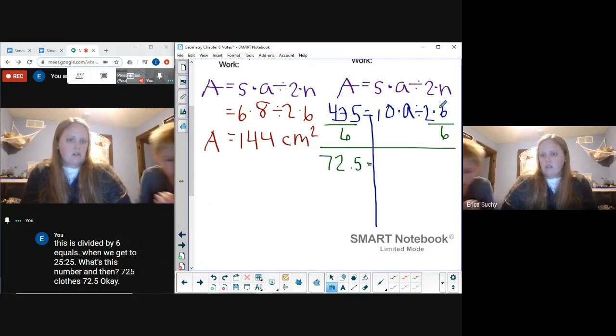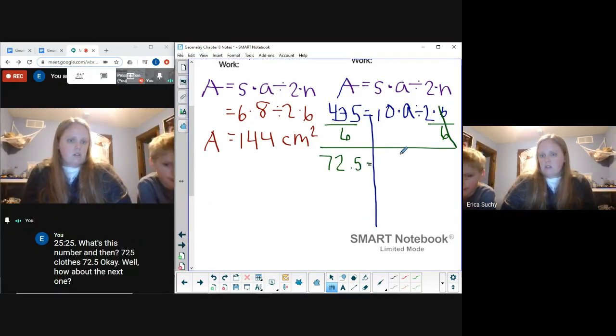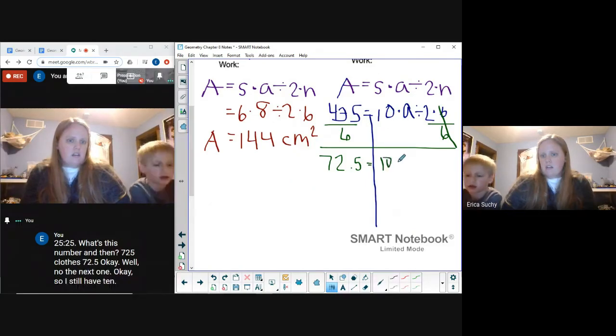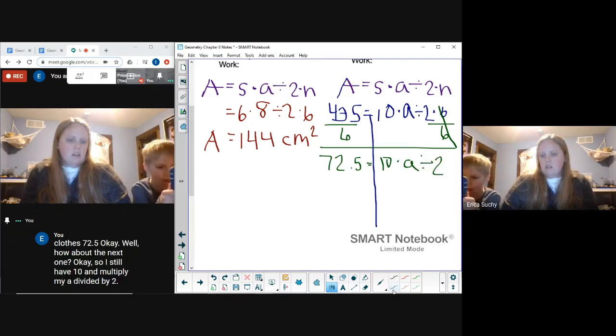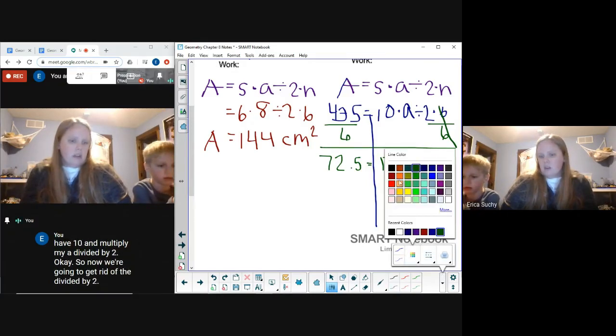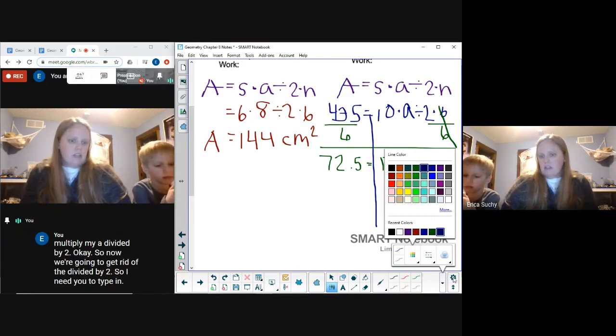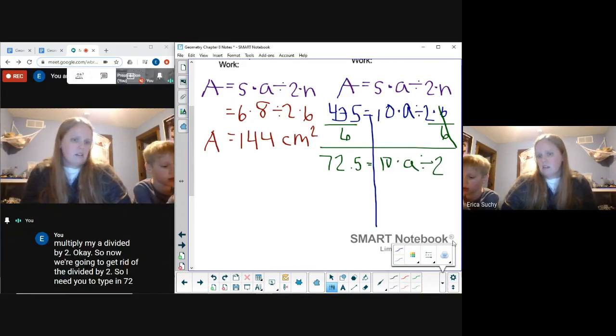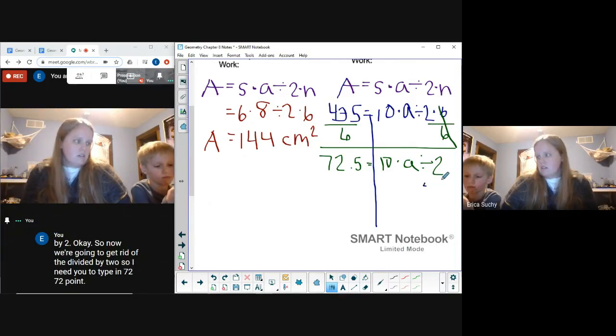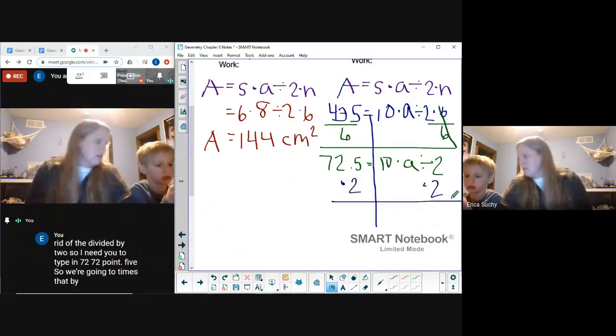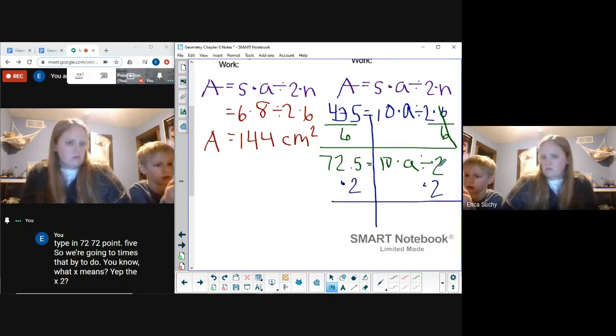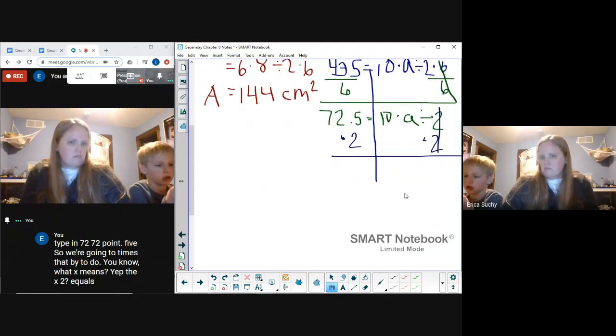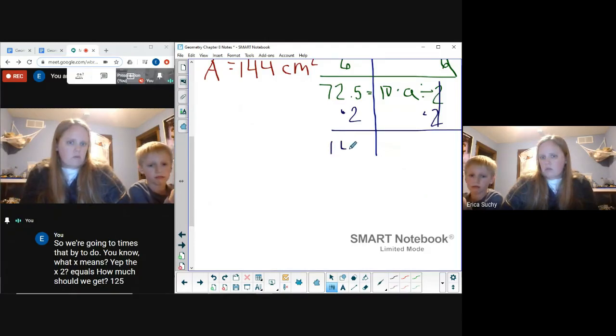Okay, so I still have 10 multiplying by a divided by 2. Okay, so now we're going to get rid of the divide by 2. So type in 72.5, and we're going to times that by 2. Do you know what times means? The x. 2 equals. How much do we get? 145.